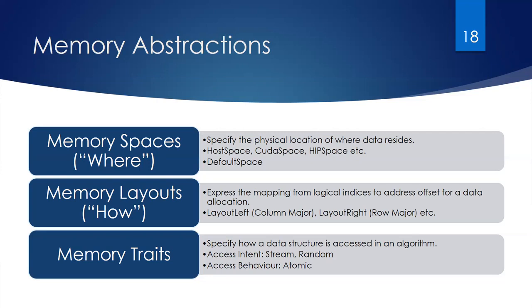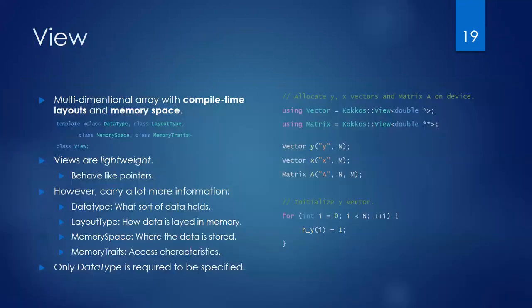Memory layouts express how data is laid out in memory — either layout left (column-major, for Fortran users) or layout right (for C users). Memory traits specify how a data structure is accessed in an algorithm, indicating intent and potentially improving performance. The View container in COCOS is a multi-dimensional array with compile-time layouts and memory space. It brings together all these memory abstractions — data type, layout type, memory space, and memory traits.